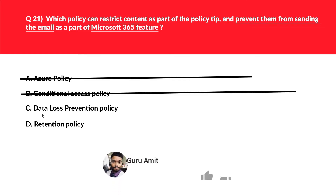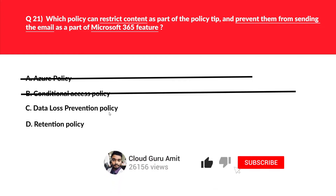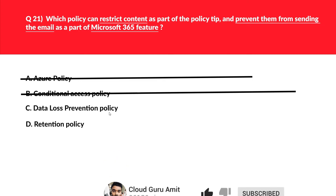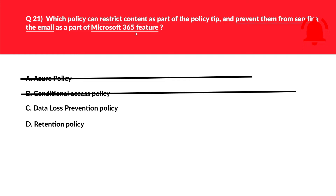Let's look at option C, that is data loss prevention policy. This seems interesting because data loss prevention policy is a Microsoft 365 feature, as per the question. And it can be used to restrict content and prevent users from sending emails as well. This can be the potential answer. We'll keep this option aside. Let's look at option D, that is retention policy. Retention policy is related to backups. We need a policy related to emails as per the question. Hence, we'll reject option D.